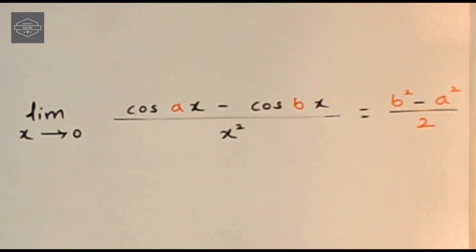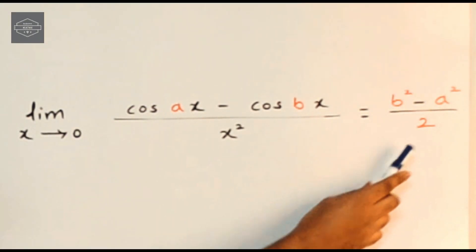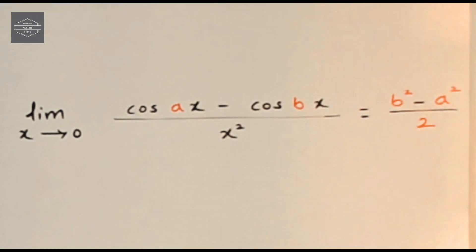Alright, so here it says, limit x tends to 0, cos ax minus cos bx upon x squared is equal to b squared minus a squared upon 2. Okay, and yes, the formula is that simple.